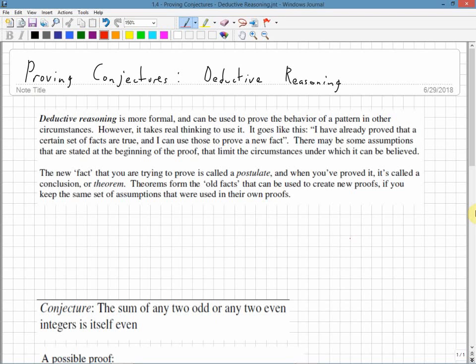It goes like this. I have already proved that a certain set of facts are true and I can use those to prove a new fact. There may be some assumptions that are stated at the beginning of the proof that limit the circumstances under which it can be believed.